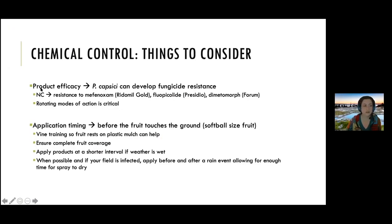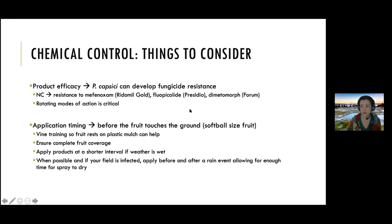As for fungicide generalities: every oomycete including P. capsici can quickly develop fungicide resistance. In North Carolina, we have documented resistance to mefenoxam (Ridomil Gold), fluopicolide (Presidio), and dimethomorph (Forum). That doesn't mean the isolates in your field are resistant, but resistant isolates do exist in the state. If you feel chemistries aren't working, diversify your spray program and rotate modes of action to combat fungicide resistance.